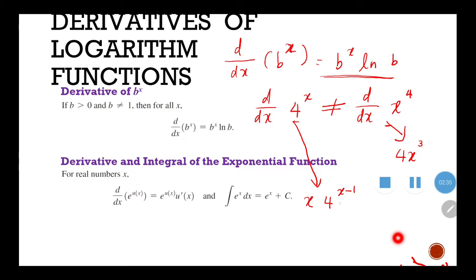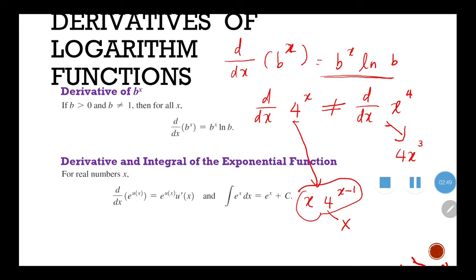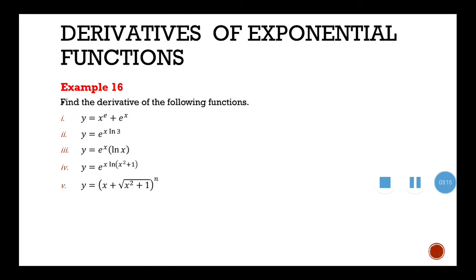Those approaches are not the way to solve it. Whenever you find something like this, just remember the formula. So the d/dx of 4 to the power of x is 4^x · ln(4). Just remember the formula.